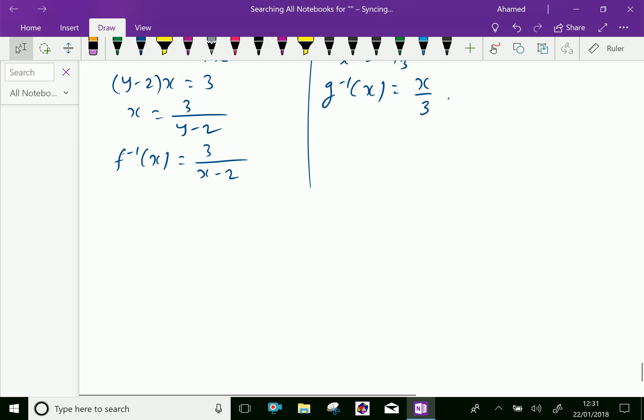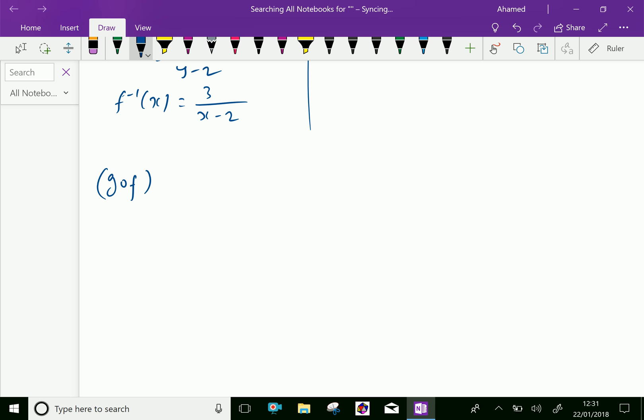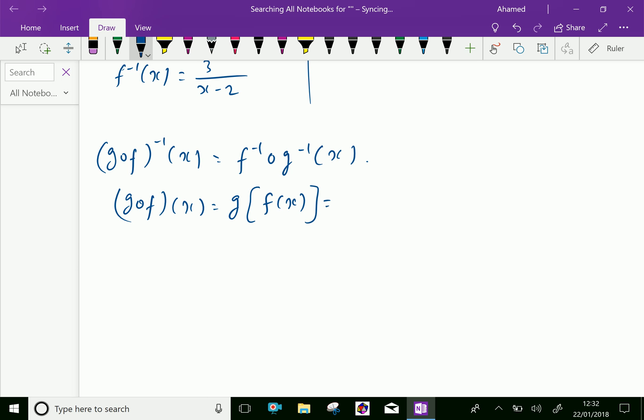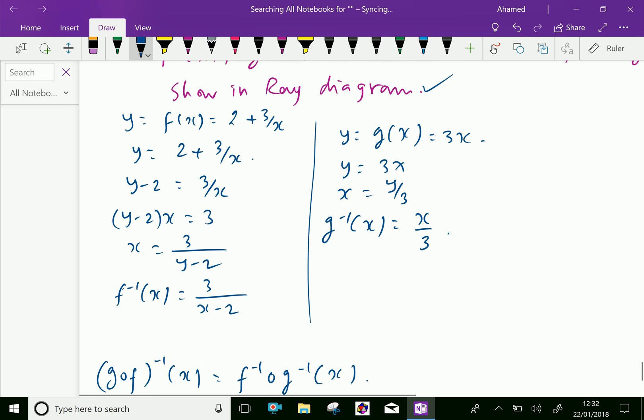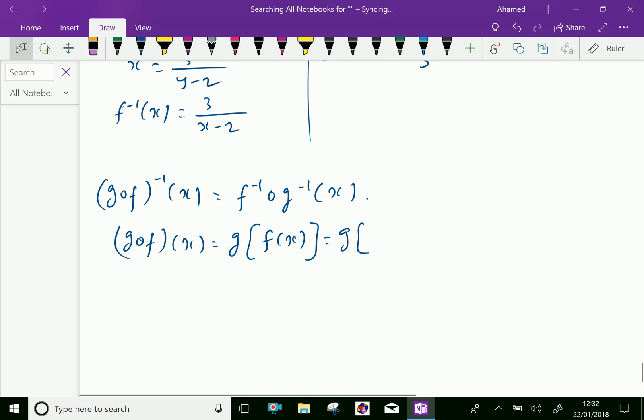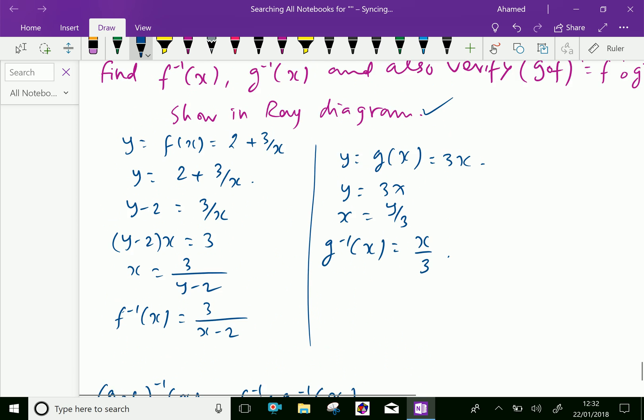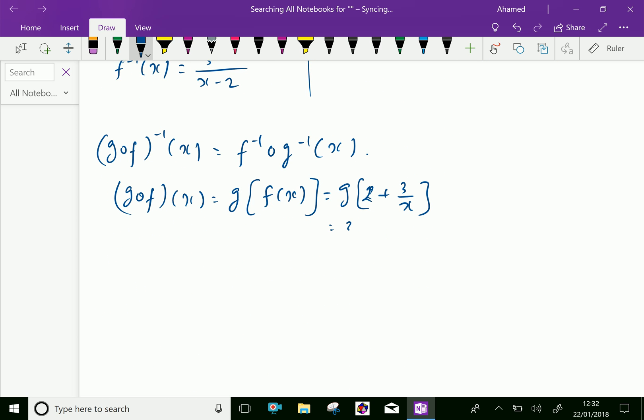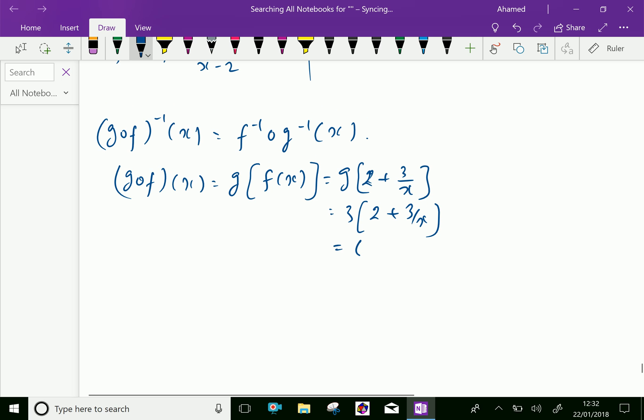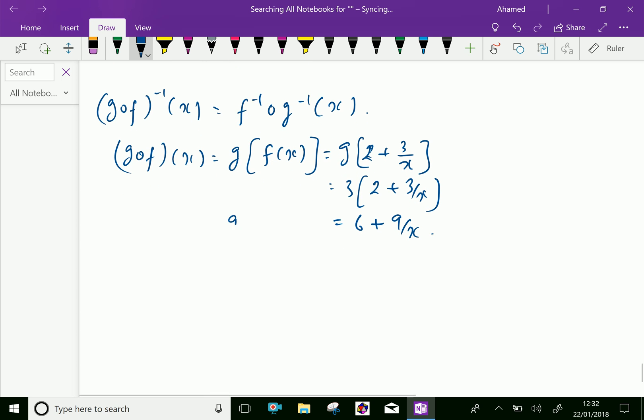Now we will do verification of g of f inverse x. G of f inverse x equal g of f of x. Now we have f of x equal 2 plus 3 over x, and apply with g. We have g function is 3x, which is equal 3 into 2 plus 3 over x. By multiplying, we get 6 plus 9 over x. This is g of f x.